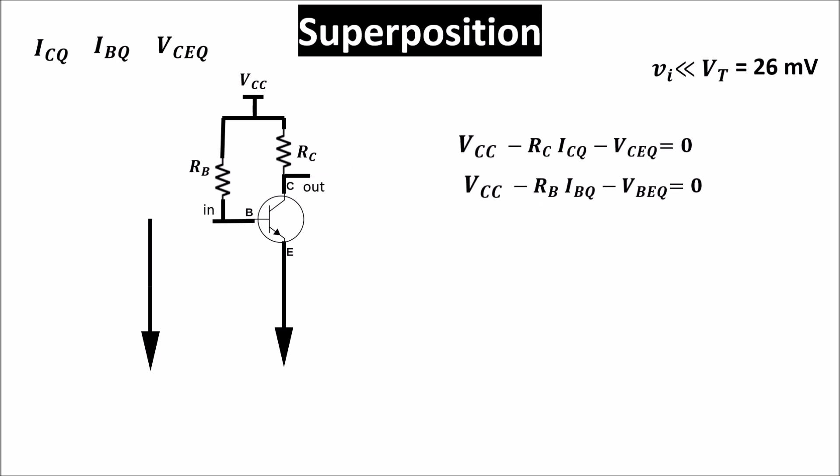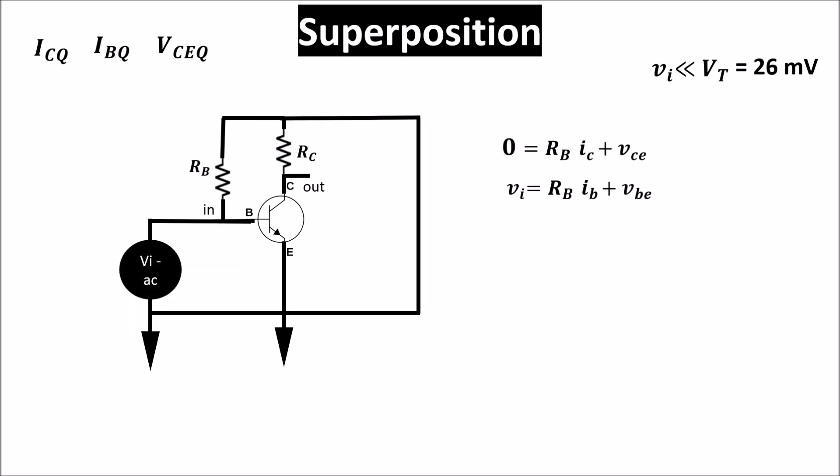In the AC analysis the circuit becomes this one. The superposition can be applied only to a linear circuit, so under the small signal hypothesis.